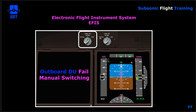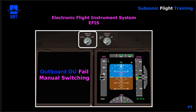If the automatic switching does not work, we could force the PFD to move from the outboard DU to the inboard DU. We'd know this by the fact that the outboard DU would go blank and the inboard display unit would still show the ND or navigation display. In that case, we take our inboard CRT switch from the normal position to the PFD position, which forces the PFD to move from the outboard to the inboard. Then we take our lower CRT switch and move it from normal to ND, forcing the navigation display to move to the lower display unit below.